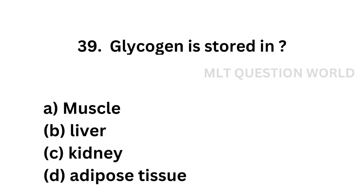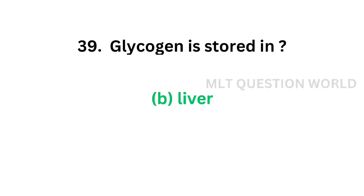Question number 39: Glycogen is stored in — option A: muscle, option B: liver, option C: kidney, option D: adipose tissue. The correct answer is option B, liver. Glycogen is stored in the liver.